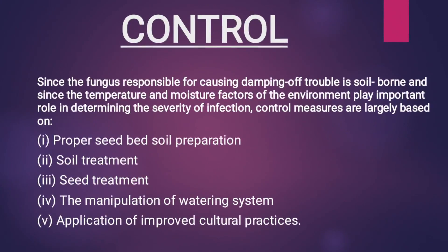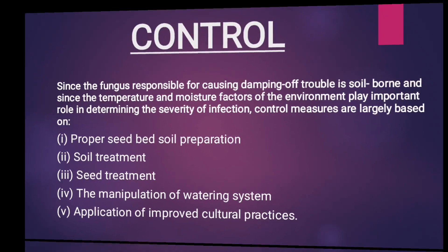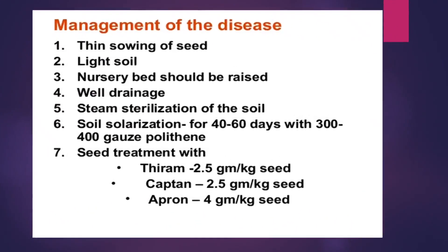How can we control the disease? We can control the disease in several ways: by proper seedbed and soil preparation, soil treatment, seed treatment, manipulation of watering system, and application of improved cultural practices. For management, we can manage the disease easily by thin sowing of seeds, using light soil nursery beds that are raised and well-drained, and by steam sterilization, which is very effective for disease management.